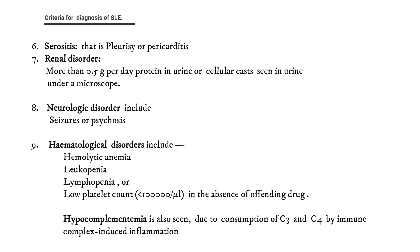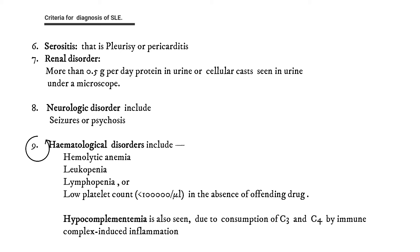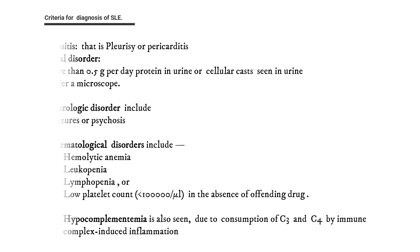Serositis — pleurisy or pericarditis. Renal disorders: more than 0.5 gram per day protein in urine or cellular casts seen in urine under microscope. Neurologic disorders include seizures or psychosis. Hematological disorders include hemolytic anemia, leukopenia, lymphopenia, or low platelet count. Hypocomplementemia is also seen due to consumption of C3 and C4 complements by immune complex-induced inflammation.